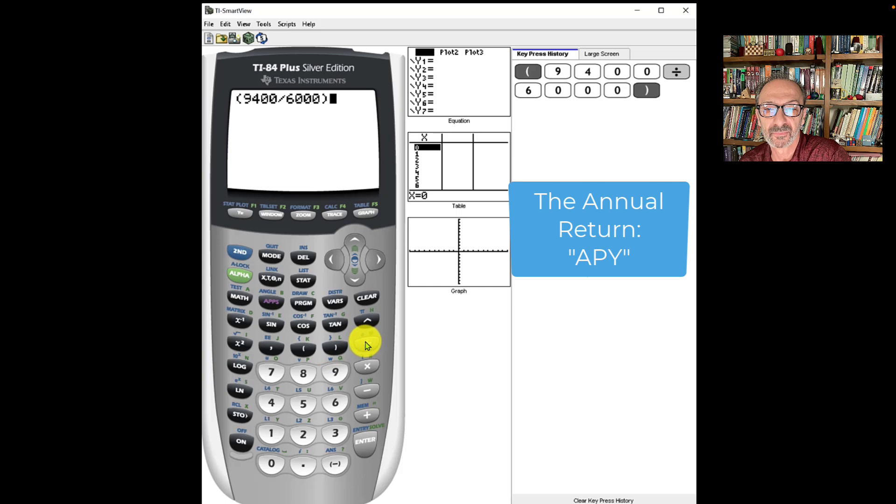Raise it to the power 1 over 5. Make sure you put it inside parenthesis as an exponent, and minus one at the end, and hit enter.